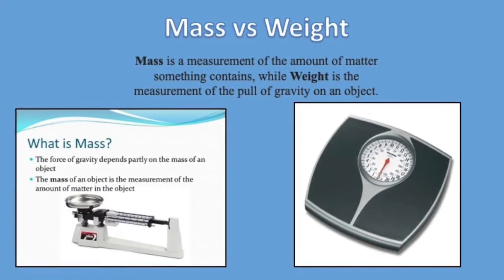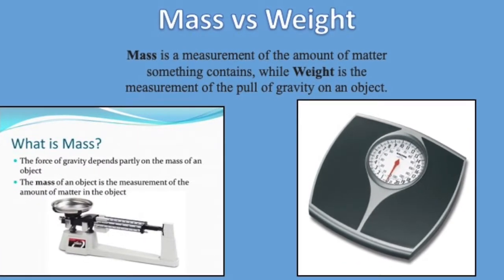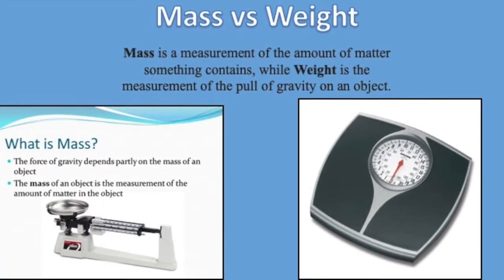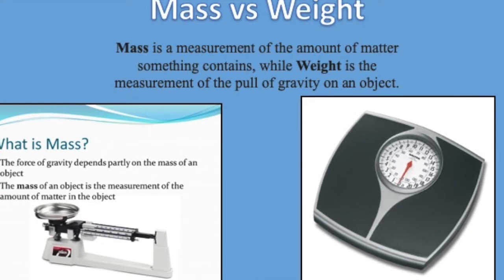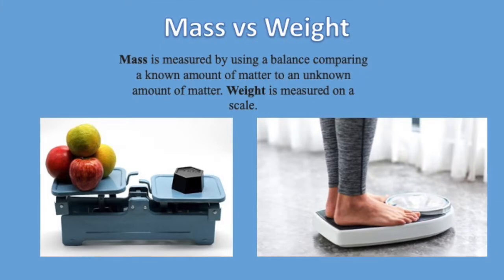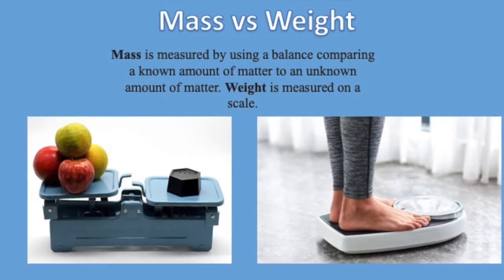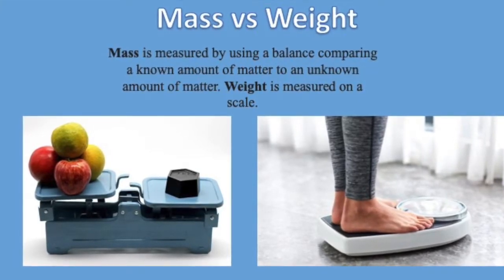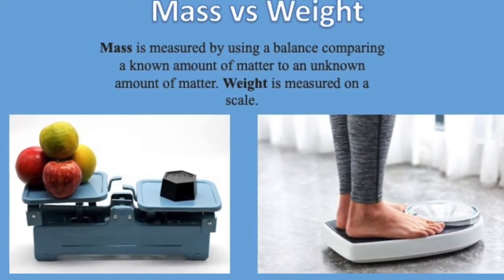We're going to recommend that you use the term mass as often as possible. Teachers, we do want you to understand the difference between mass versus weight. Mass is the measurement of the amount of matter something contains, while weight is the measurement of the pull of gravity on that object. Mass is measured using a balance comparing a known amount of matter to an unknown amount, while weight is measured on a scale — the force of gravity pulling down on that matter.